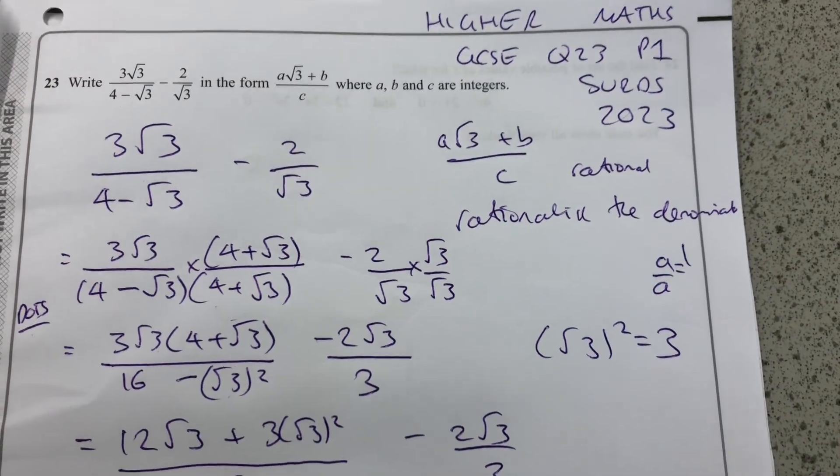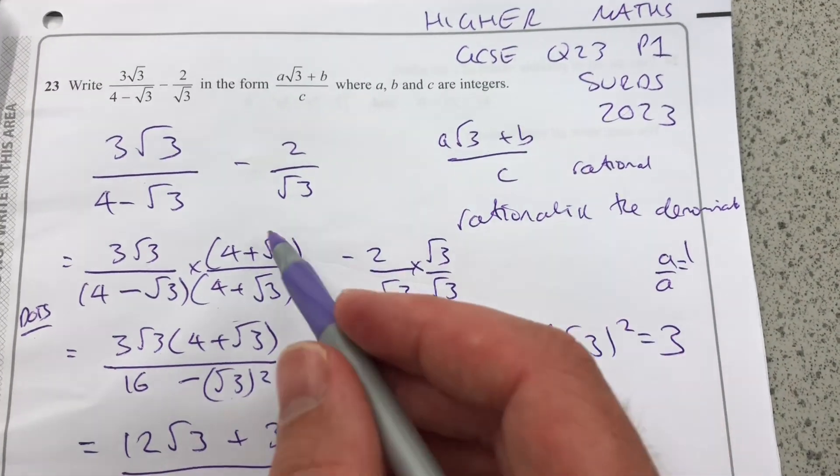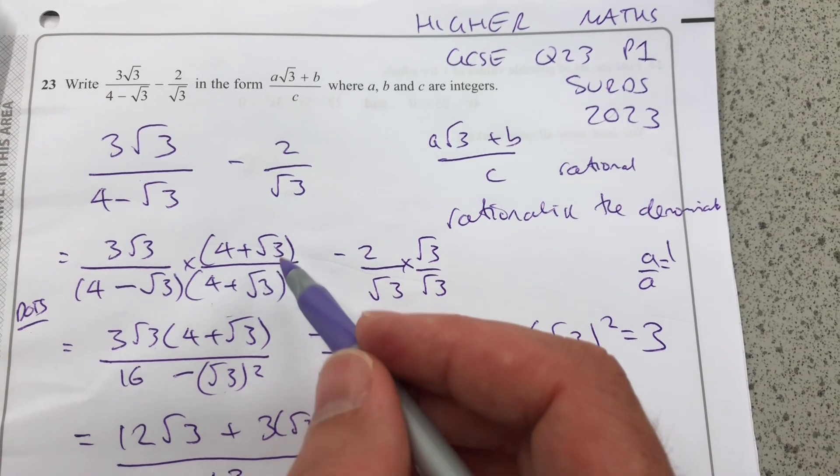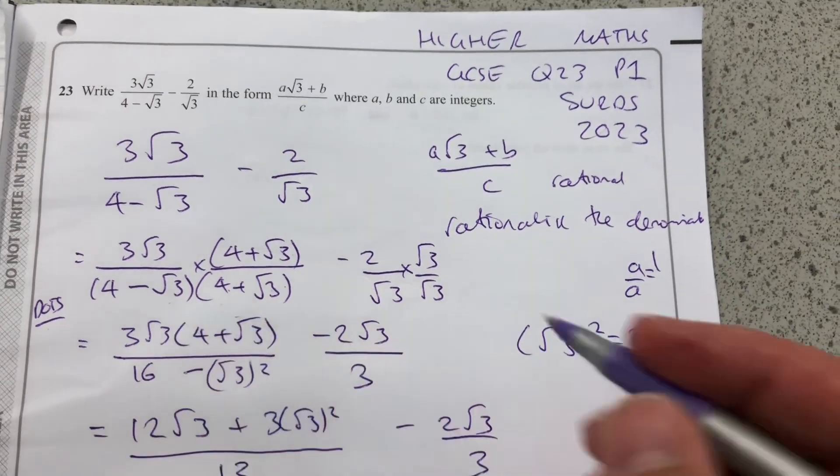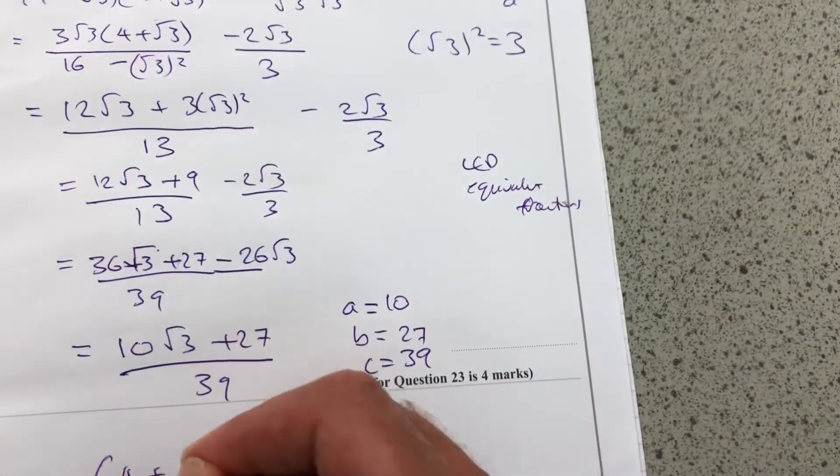So just to quickly go over that again. I multiply by a term that is, in effect, 1. That through the expanding of those brackets, if you're not sure, 4 plus root 3.